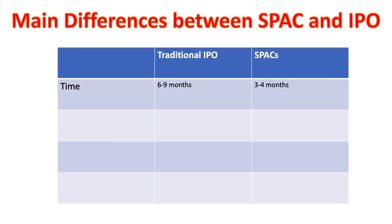Now let's talk about the main differences between the SPAC process and the traditional IPO process. The first is timing. In the traditional IPO, it can take anywhere from six to nine months for the company to come public, whereas in the SPAC process it could happen in as little as three to four months. The second is the due diligence process. In a traditional IPO it takes a long time and is very extensive — the investment bank and institutional investors look carefully at the financial statements. Whereas in a SPAC process, the due diligence is pretty short and not that intensive because there's no company to look at; they're really just looking at a holding company.